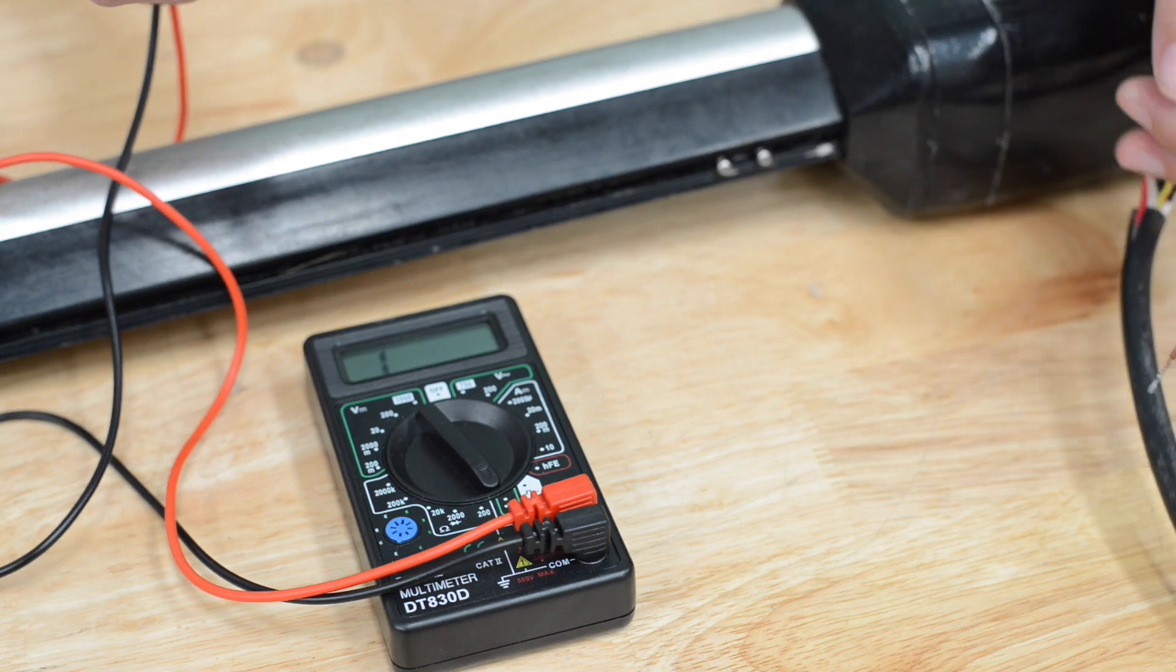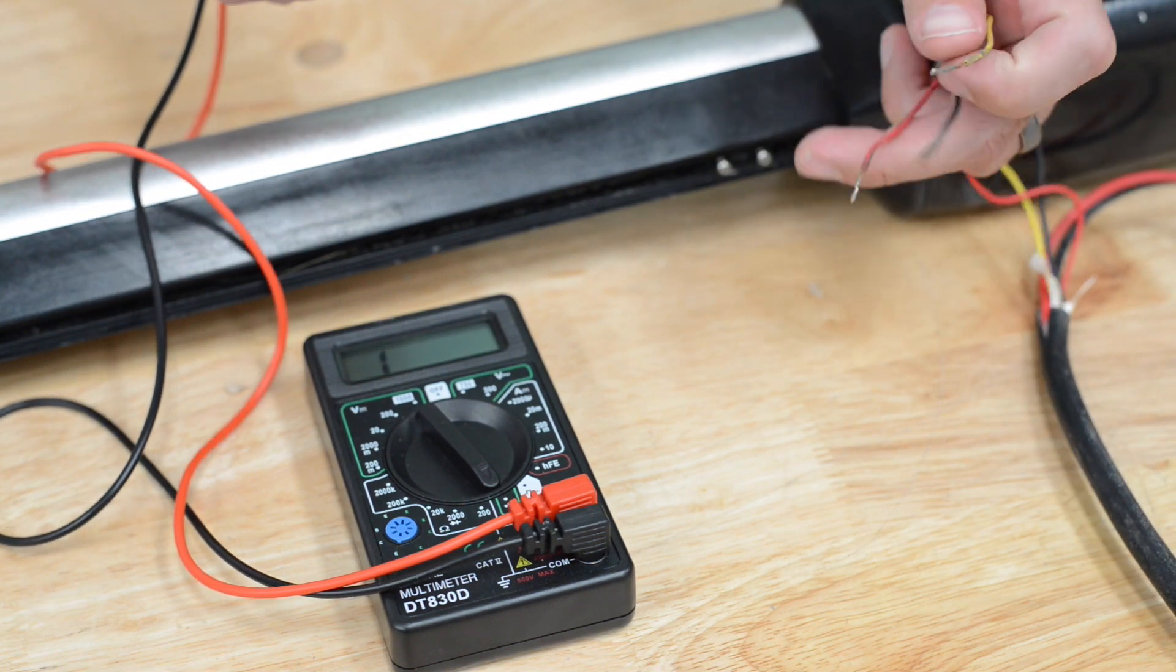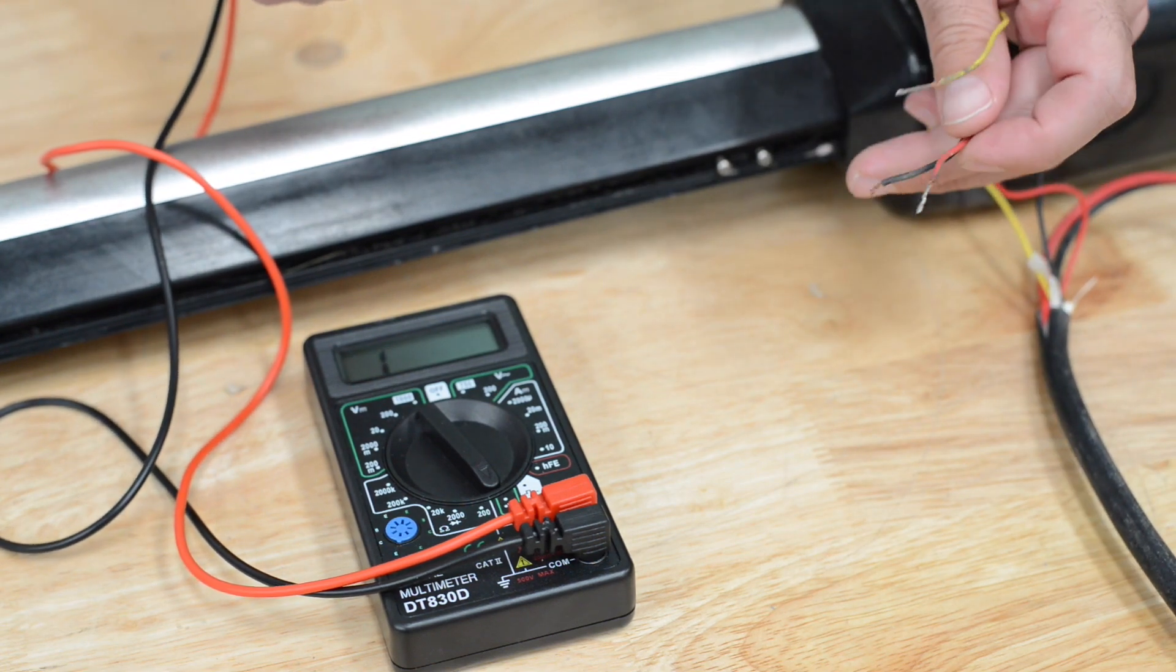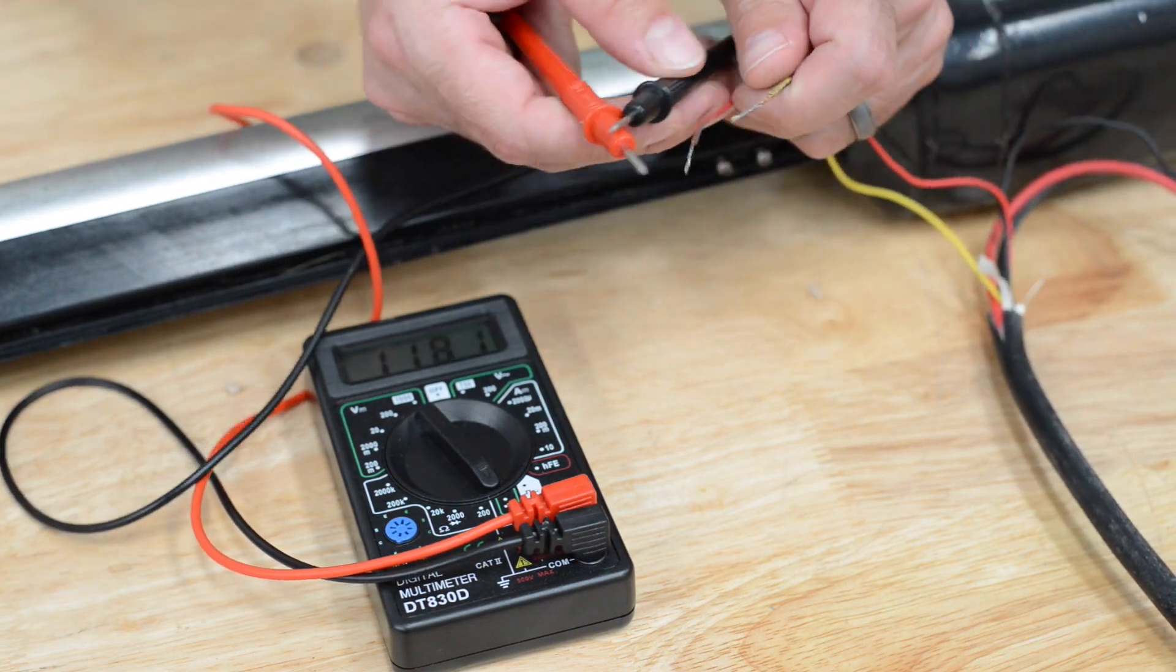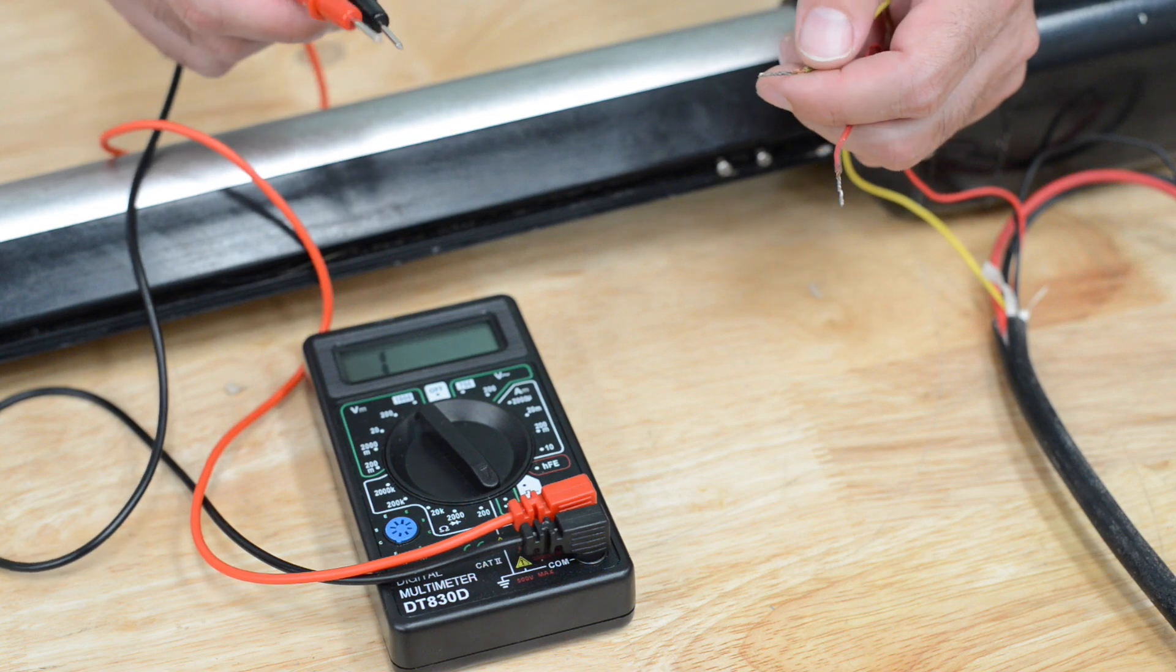So we want to make sure that when the limit switches are hooked up that the same thing occurs. You should be able to get the same flow as if these two are touching through the limit switch if the limit switch is not triggered.